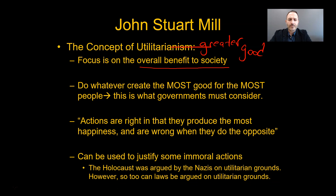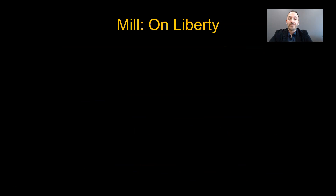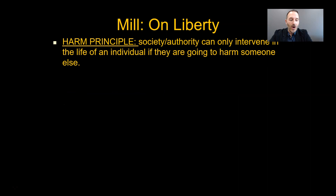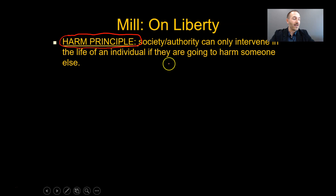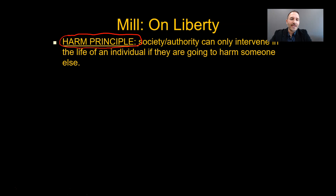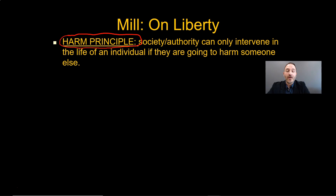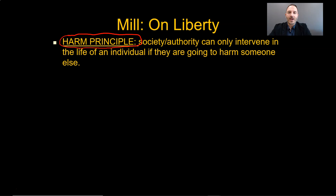The Nazis justified the Holocaust under utilitarian grounds, which is a morally bankrupt argument — but under utilitarian grounds it can actually make sense, which is horrifying. In Mill's book On Liberty, he also discusses something called the harm principle, which is a really interesting idea. Mill says that society or authority can only intervene in the life of an individual if they're going to physically harm somebody else. Does that mean that if I'm an individual of rational, sound mind and I want to snort six pounds of cocaine on a Friday night, I can do that as long as my actions don't harm anybody else? Yeah, that's exactly it.